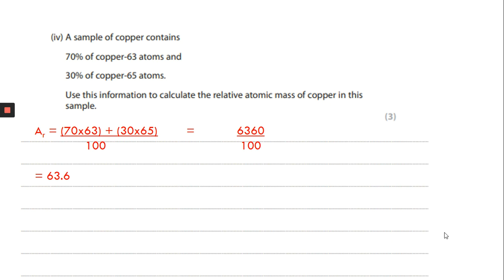Final part of this question. A sample of copper contains 70% of copper-63 atoms and 30% of copper-65 atoms. Use this information to calculate the relative atomic mass of copper in this sample. So remember, AR is our relative atomic mass. You do the abundance times by the mass number. So 70 times by 63 plus the abundance of the other one, so 30 times by 65. Add those two up and then divide by 100. So it gives us an answer of 63.6.